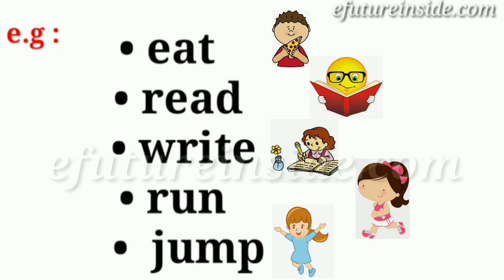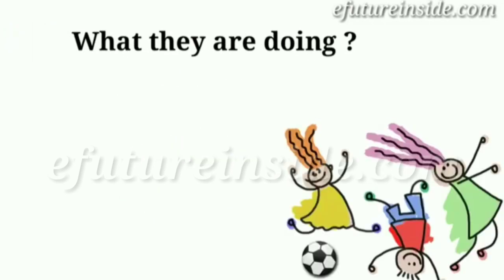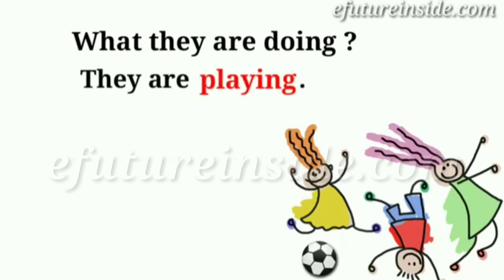An easy way to identify the verb in a sentence is: if we ask the question 'What are they doing?', then the answer to that question is the verb. For example: 'They are playing' — here 'playing' is the verb.